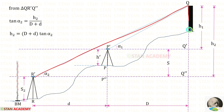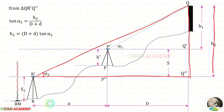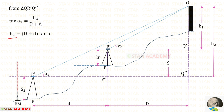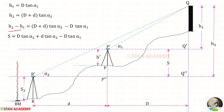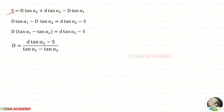Now let us take the big triangle. Again using the tan formula: tan alpha 2 equals H2 upon (D plus d). So H2 equals (D plus d) tan alpha 2. Let us subtract H1 from H2. So H2 minus H1 equals (D plus d) tan alpha 2 minus D tan alpha 1. Since H2 minus H1 equals S, we substitute S in place of H2 minus H1.